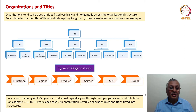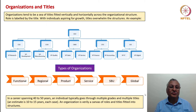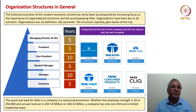In a career spanning 40 to 50 years, an individual goes through several ranks, multiple grades, passes through multiple responsibility layers, and also has several titles. An organization is verily a canvas of roles and titles fitted into structures. Roles and responsibilities are typically expressed through titles. We have chosen this topic of title versus stature mainly because individuals tend to seek titles once they enter an organization.